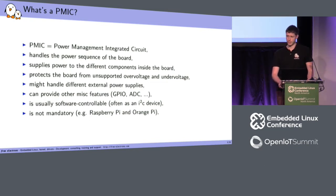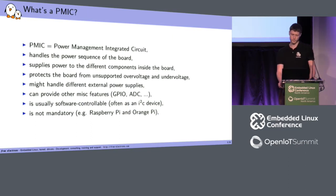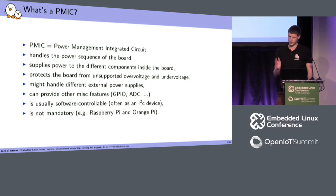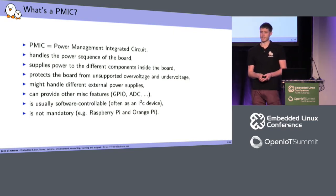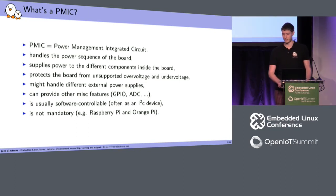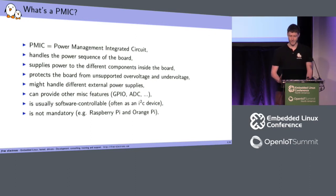You have two ways to do it: with a PMIC or by hard-coding it in hardware. The PMIC also supplies power to the different components inside your board — you can have 5, 10, 12, or whatever number of different components with different voltages as inputs, and the PMIC handles all that. It also protects the board from unsupported over-voltage and under-voltage. For example, if you have a faulty charger outputting 7 volts instead of 5, it will just burn your board, but the PMIC tries to protect it.